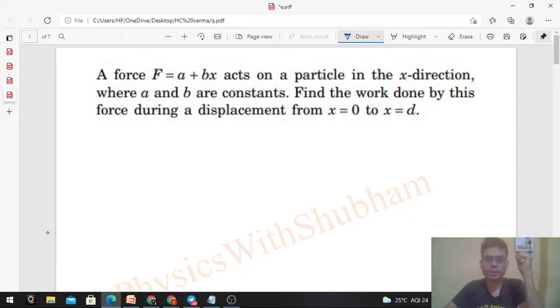It says a force F = a + bx acts on a particle in the x-direction, where a and b are constants. Find the work done by this force during a displacement from x = 0 to x = d.